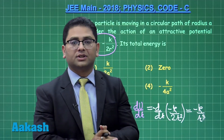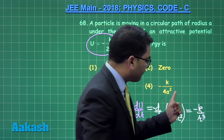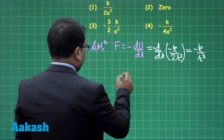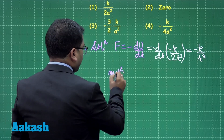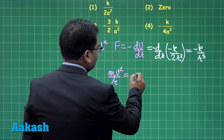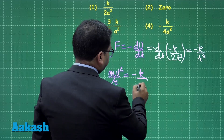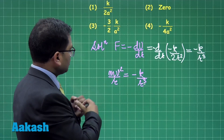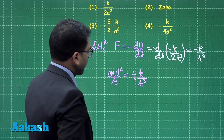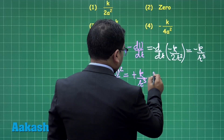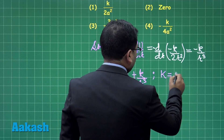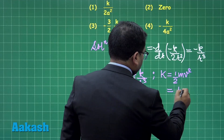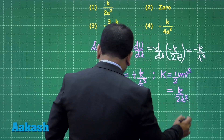The negative direction of force indicates it is attractive, directed towards the center, acting as the centripetal force. Equating with mv²/r = k/r³, and taking the magnitude, the kinetic energy (½mv²) works out to k / 2r².